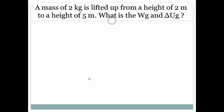A mass of 2 kg is lifted up from a height of 2 meters to a height of 5 meters. What is the work done by gravity and the change in potential energy due to gravity?